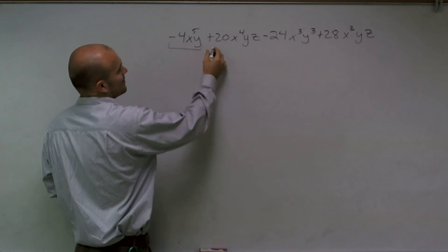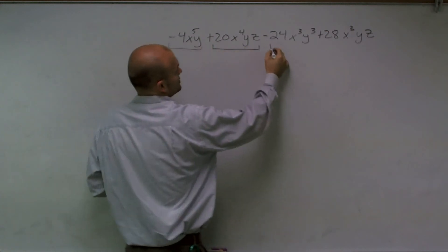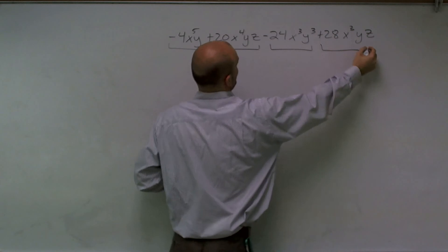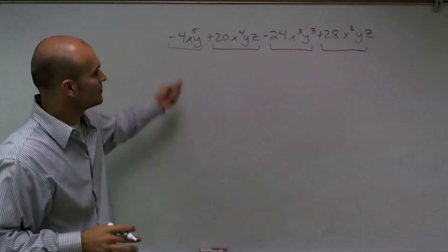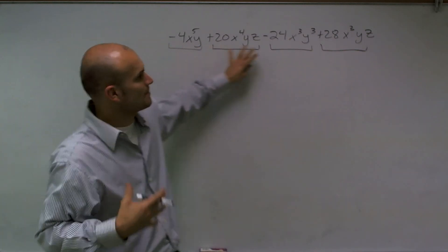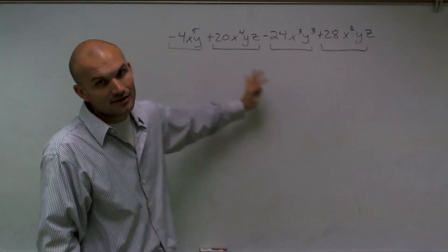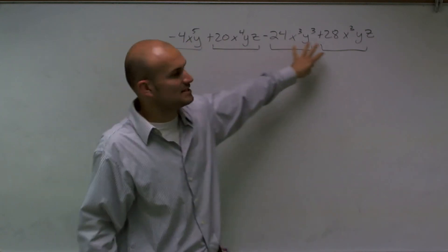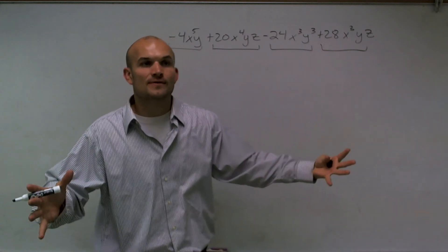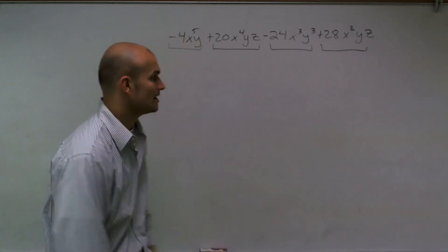So you can see right here, I have one term, here's another term, another one, and another one. So I have four separate monomials that what I'm going to do is for me to factor something out, each one of these monomials have to share that term that I'm going to factor out.